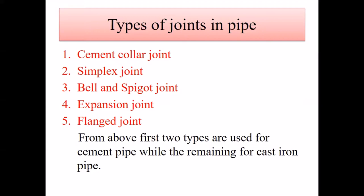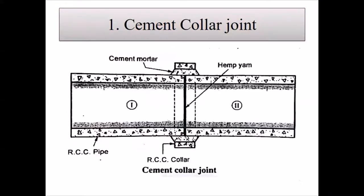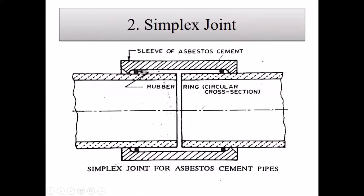In the cement collar joint, cement mortar, hemp, and an RCC collar are used with RCC pipe. The simplex joint is the simplest type of joint used in pipe connections.